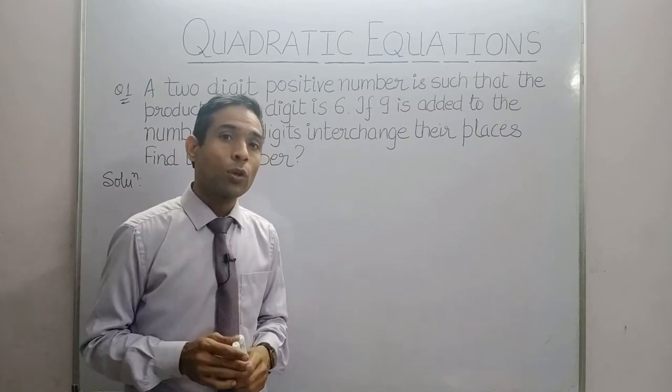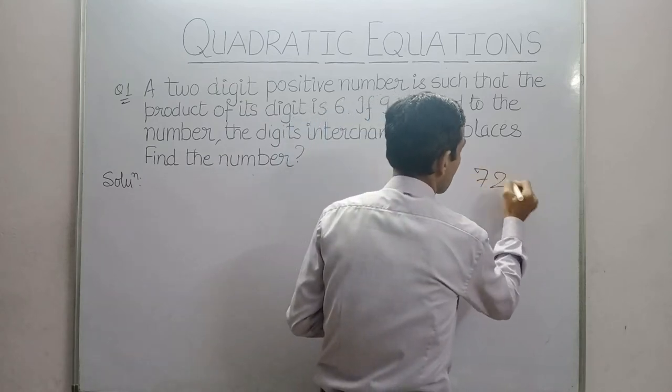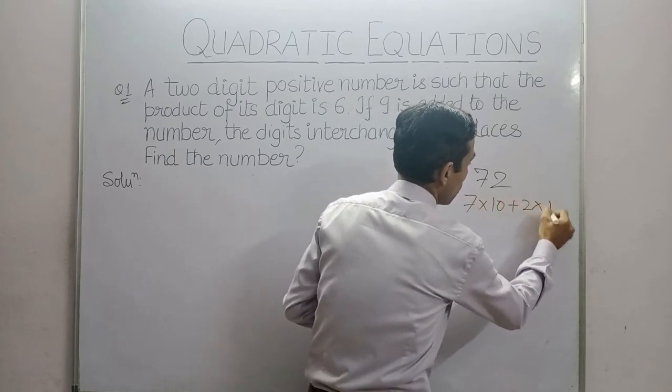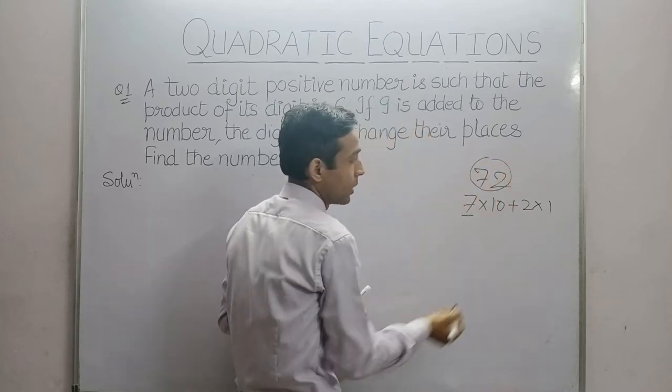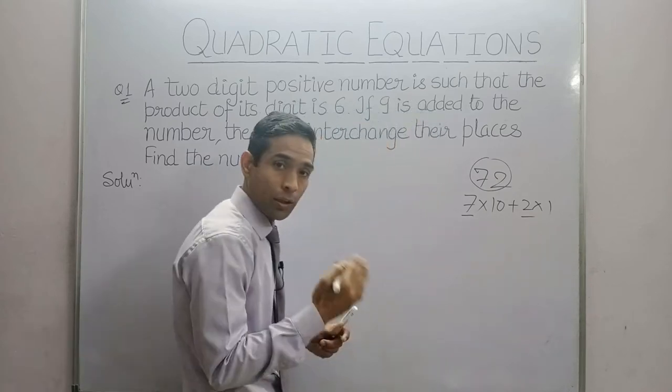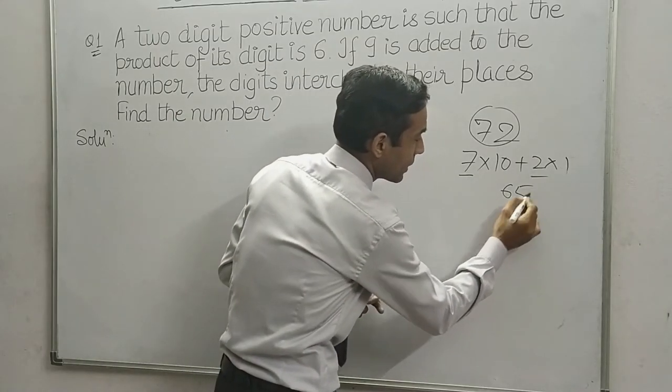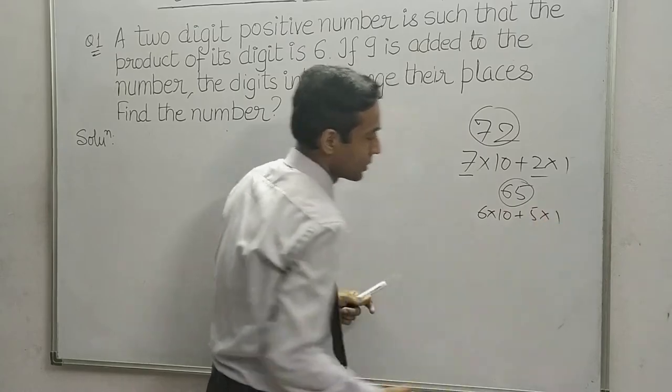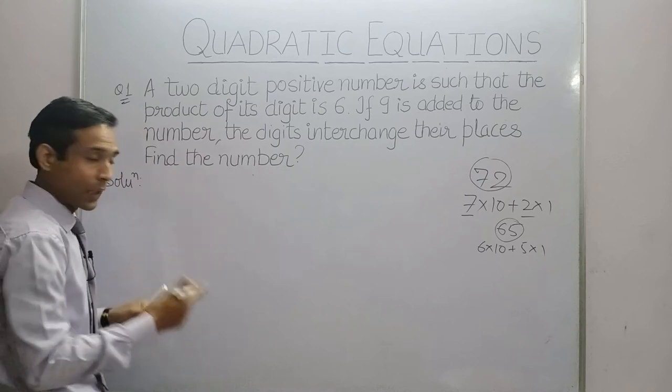Now, first of all, let's see what we have taught you in the lower classes. So if we have a two-digit number, let's say 72, how can we expand this? 7 into 10 plus 2 into 1. Here, 72 is a number, 7 is a tens digit and 2 is a unit digit. Let's pick up one more number, 65. Here, 65 is a number, 6 and 5 are digits, 6 is the tens digit and 5 is the unit digit. So here, first of all, we have to suppose the unit digit number and tens digit number.